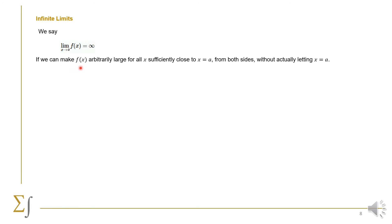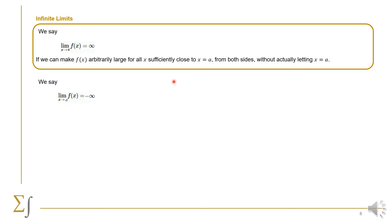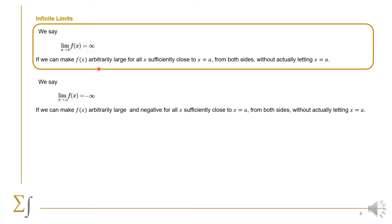Now we talk about infinite limits. We say the limit of f(x) as x goes to a equals infinity if we can make f go arbitrarily large for all x sufficiently close to a from both sides, without having x equal exactly a. Similarly, the limit equals minus infinity if we can make f(x) arbitrarily large and negative for all x getting closer and closer to a from both sides, again without a itself being one of the values of x.